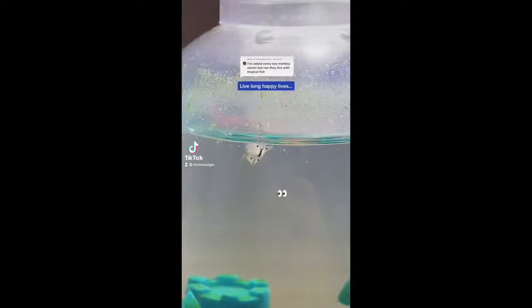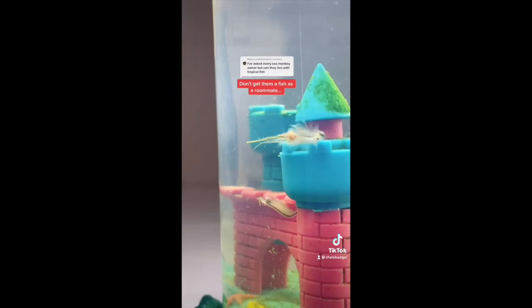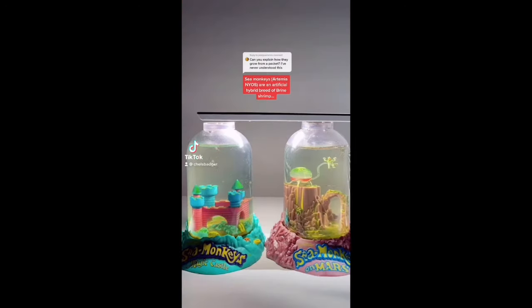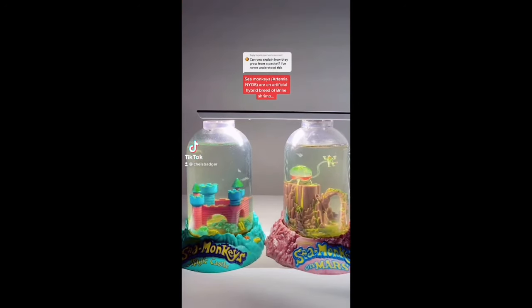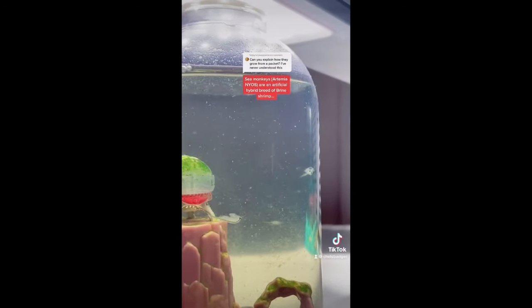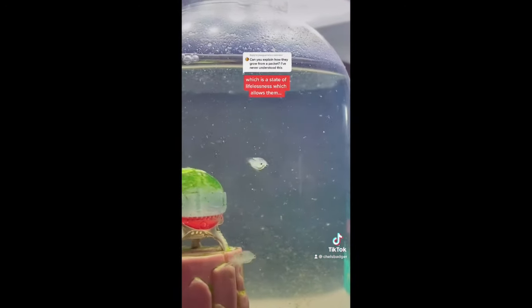If you want your sea monkeys to live long happy lives, don't get them a fish as a roommate. They can't live together because fish will eat and kill your sea monkeys almost instantly. Artemia NYOS, otherwise known as sea monkeys, are an artificial hybrid breed of brine shrimp that undergo something called cryptobiosis, which is a state of lifelessness which allows them to survive in extreme dryness.